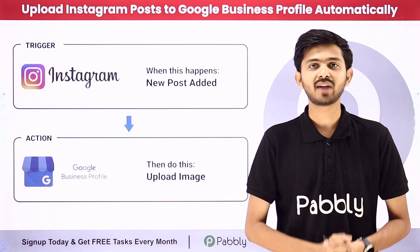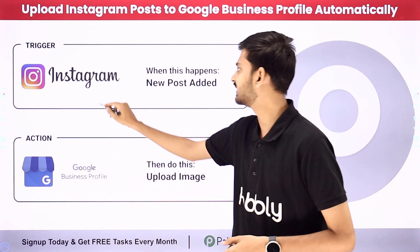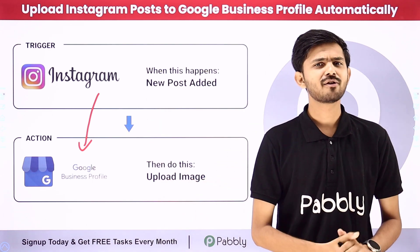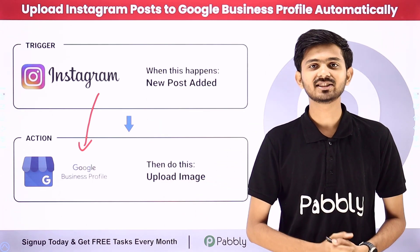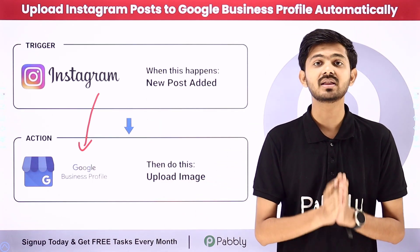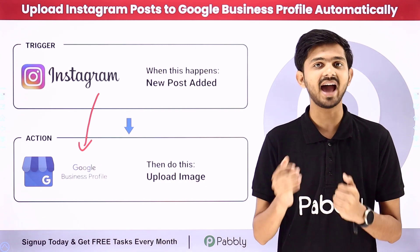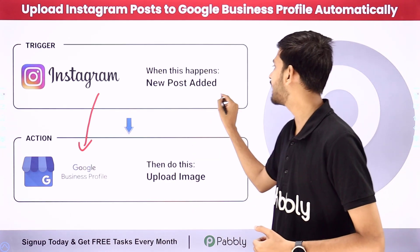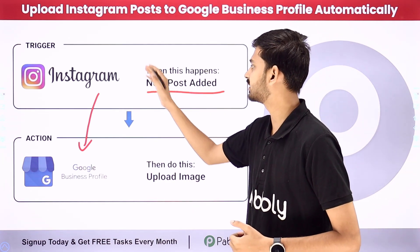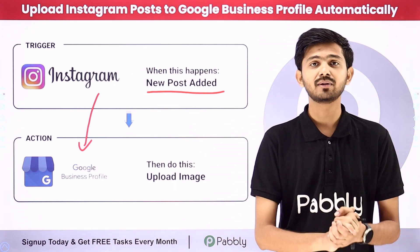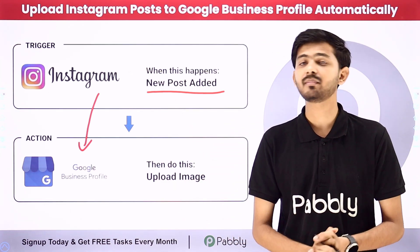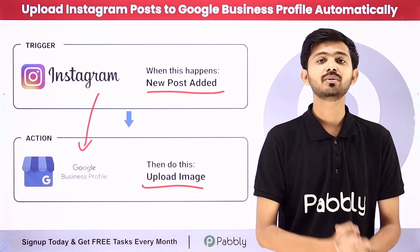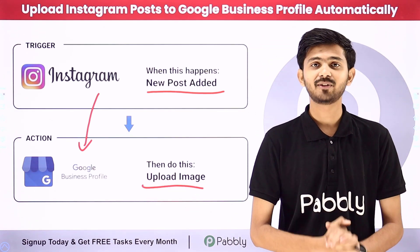For my objective I have to build a connection between Instagram and Google Business Profile. I'm going to use Pabbly Connect, which is an amazing software for automation and integration. With Pabbly Connect, as I add a new post on my Instagram account, that image will automatically get uploaded on my Google Business Profile too.